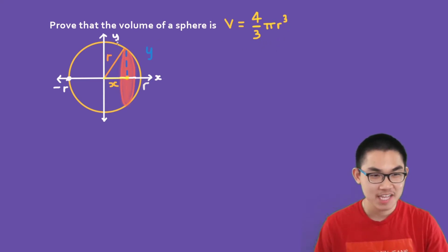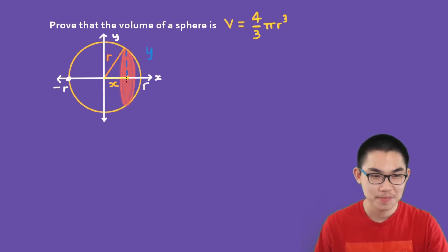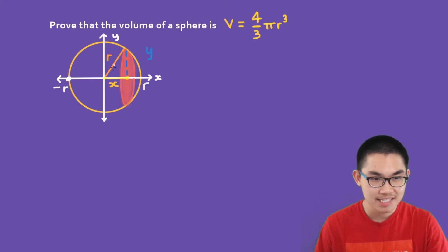So let's say that we have a sphere looking like this, and if you cut the sphere right here and you look at the cut, you're going to get a circle. If we do a triangle connecting from this point to this point, this is the length of the radius, from here to here is x, and from here to here is y.